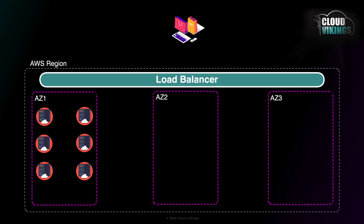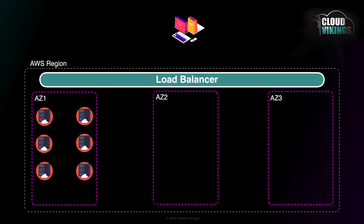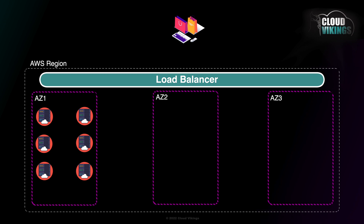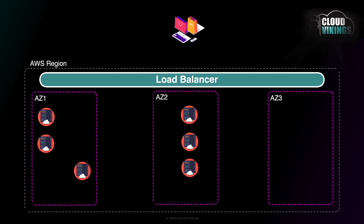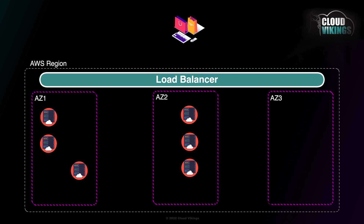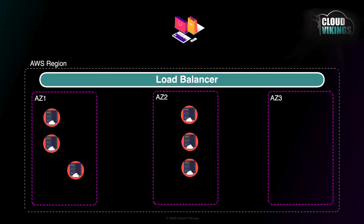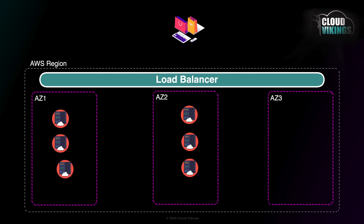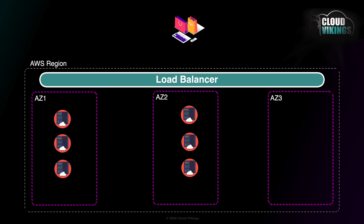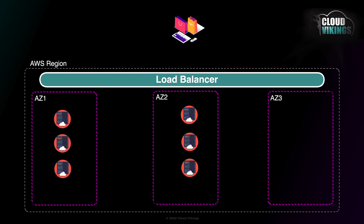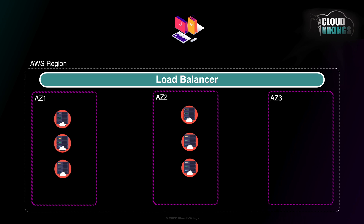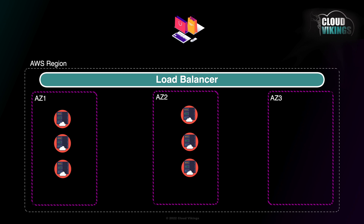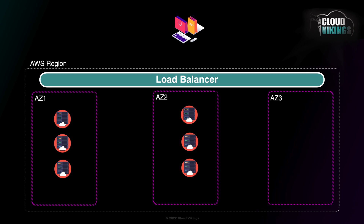So we learn from that situation and decide to leverage two AZs. We now put three servers in one AZ and three in another. This essentially costs the same to do — we're still running six servers, just spread out over two AZs — but now we're protected against the failure of an AZ. Somewhat.